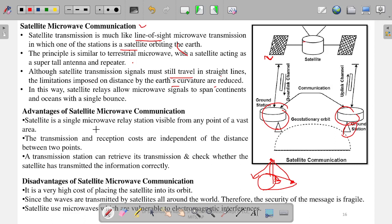What are the advantages of satellite communication? A satellite is a single microwave relay station visible from any point of a vast area. From this much area of the earth it is visible—visible in the sense the microwave signals can directly come from there. The transmission and reception cost are independent of the distance between two points. If you are sending signal here or there, that does not depend on the distance; cost will be same. Once it is sending the signal, every point on the earth will receive it. A transmission station can retire its transmission and check whether the satellite has transmitted information correctly or not. A transmission station can check whether this satellite has properly sent signal to another antenna because this checking antenna is also receiving the same signal. If it has received, then the other antenna should have received already.